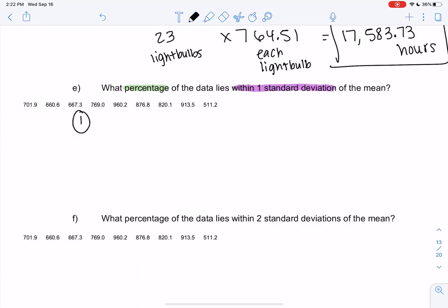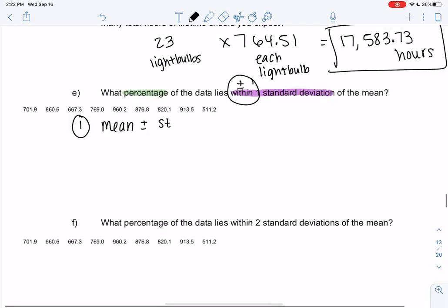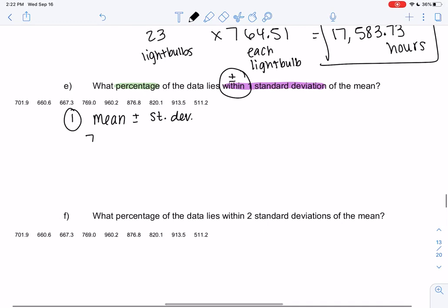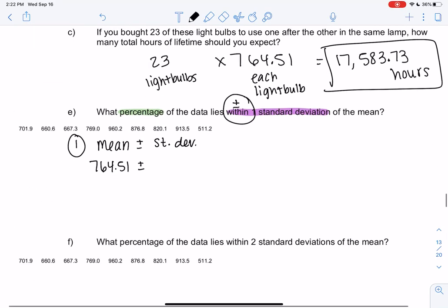So within one standard deviation means the mean, and then within tends to mean plus or minus. So we can be basically over or under by one standard deviation. So we're going to take 764.51 and we'll add and subtract the standard deviation of 143.42.